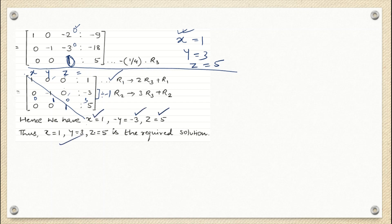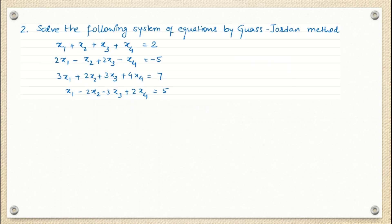This is the Gauss-Jordan method to solve the system of linear equations. Now let's look at one more question. This question has four equations and four unknowns, so we will solve the following system of equations by Gauss-Jordan method.